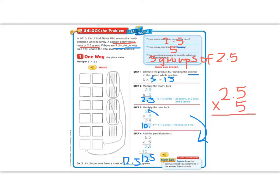But now what I'm going to do is I'm going to pretend that that decimal is not even there, and I'm going to multiply. So 5 times 5 is 25, and 5 times 2 is 10, plus the 2 we had above gives me 12.